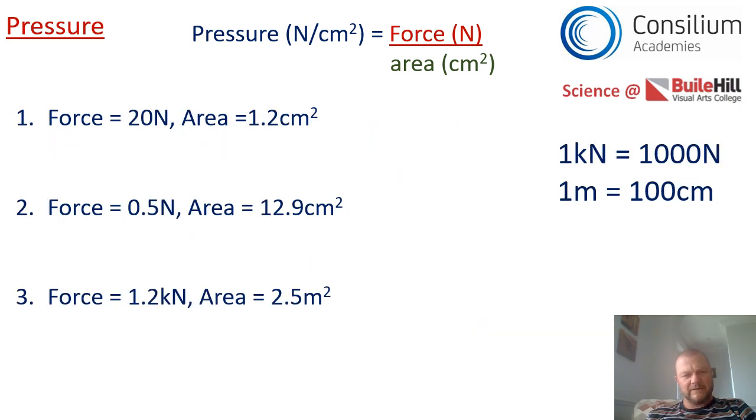Time for a little further practice. There are three questions for you to answer on screen and you're going to pause the video in a second and answer them on paper. Before you do that just be careful on question three. It says 1.2 kilonewtons. There are 1000 newtons in one kilonewton and the area is in metres, 2.5 metres squared. There are 100 centimetres in one metre. Your answer must be in newtons per centimetre squared. Pause the video now and have a go with the questions.